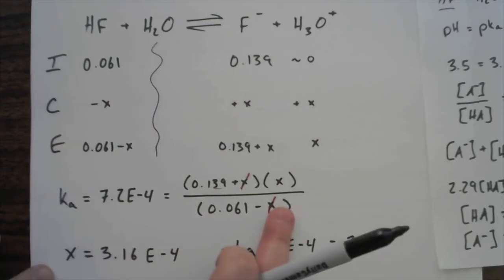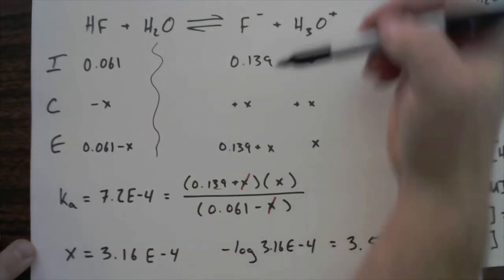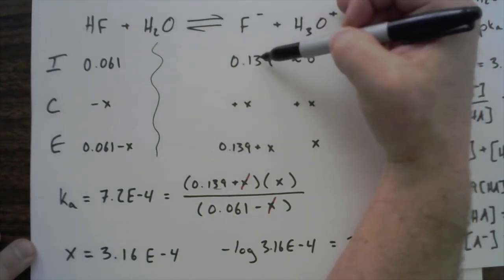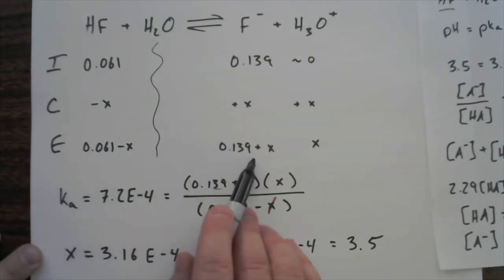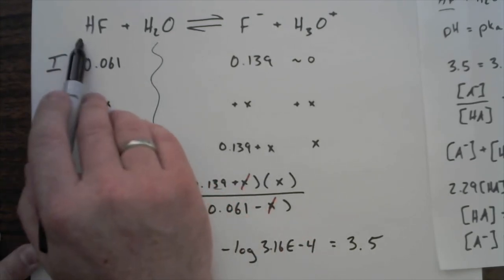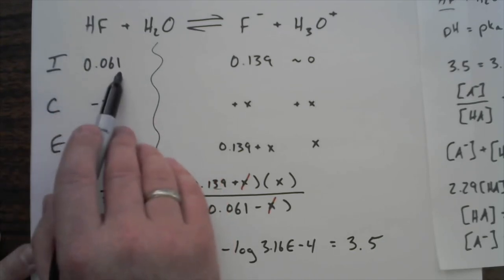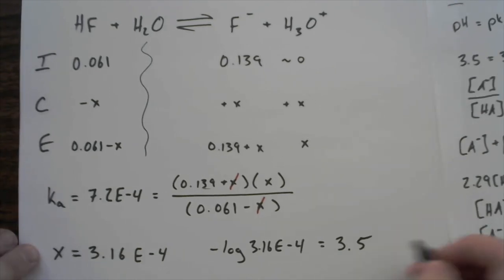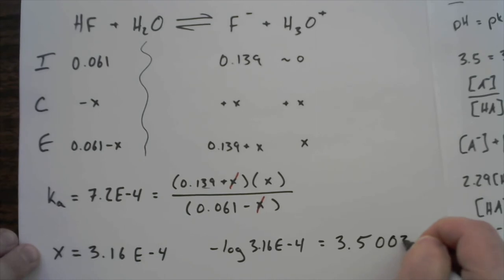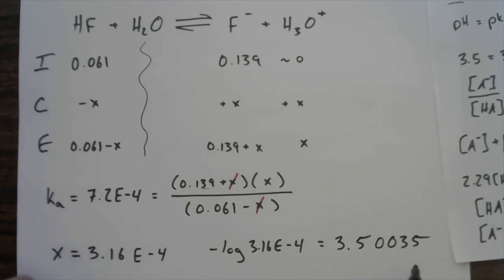And what we eventually always end up doing with our buffer work is we make this approximation that's right here. Now we're not going to write this math out every time, but you'll notice that whatever the initial amount of F minus I had, we eventually call it constant, or we say in the end I'm still going to have exactly that amount. Because remember, our approximation is getting rid of that x. However much HF we started with, we eventually say that that's how much we end with, even in our equilibrium expression. It's because of this math. Now if I carry this out, I still have it on my calculator, 3.50035. I'm sure I have some other rounding errors somewhere in here, but I want to make sure that people understand...